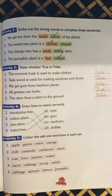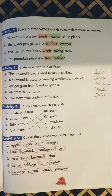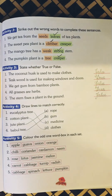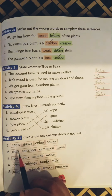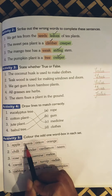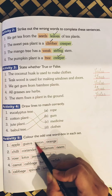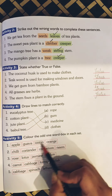Now come to activity number 5. You have to color the odd one word box in each set. Here you have 4 boxes in each row. The 3 of them are similar and the 1 is odd, you have to color that odd box. So if we look at the first one: apple, guava, onion and orange. The 3 are fruits whereas onion is not a fruit. So we will color the third box, that is onion.